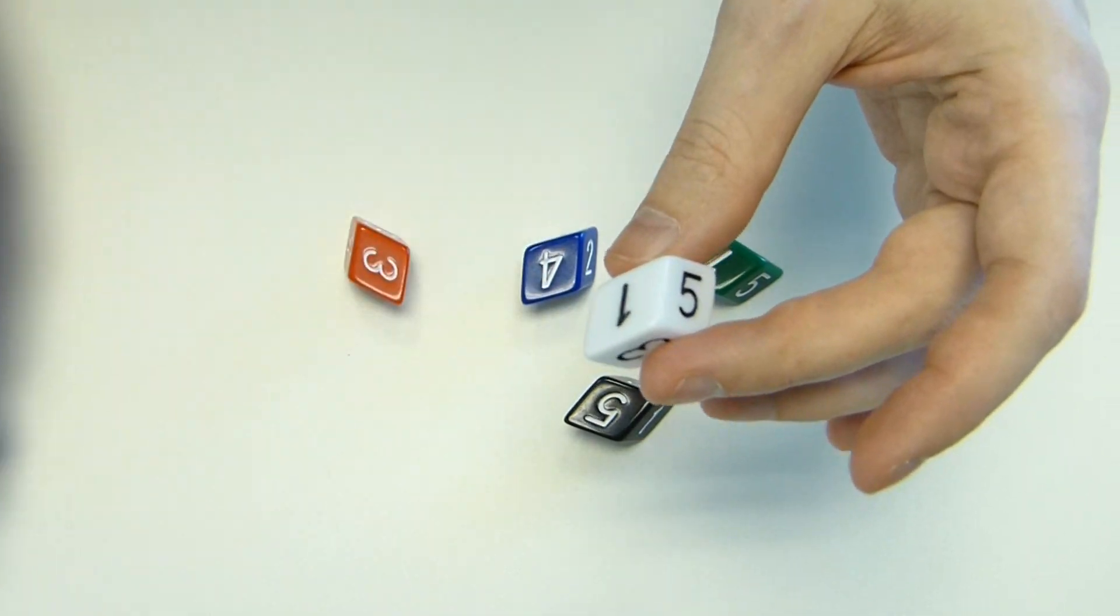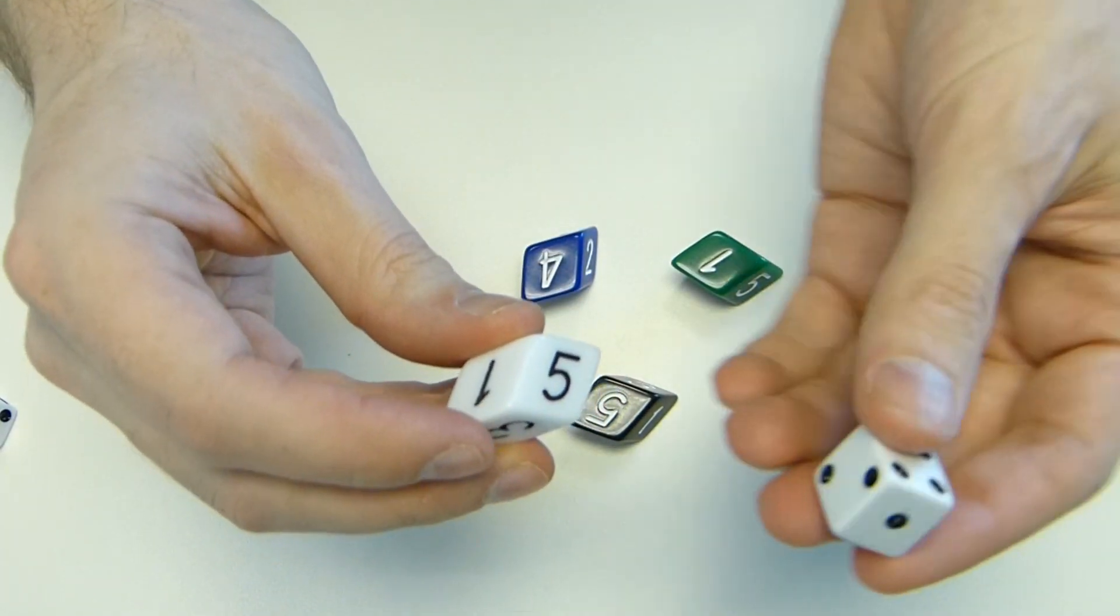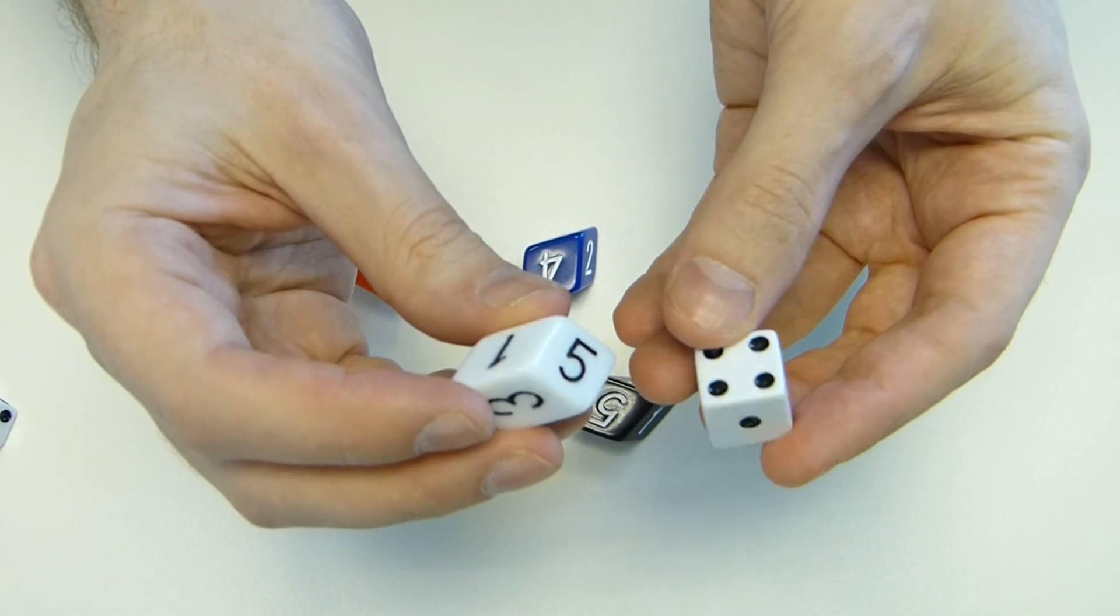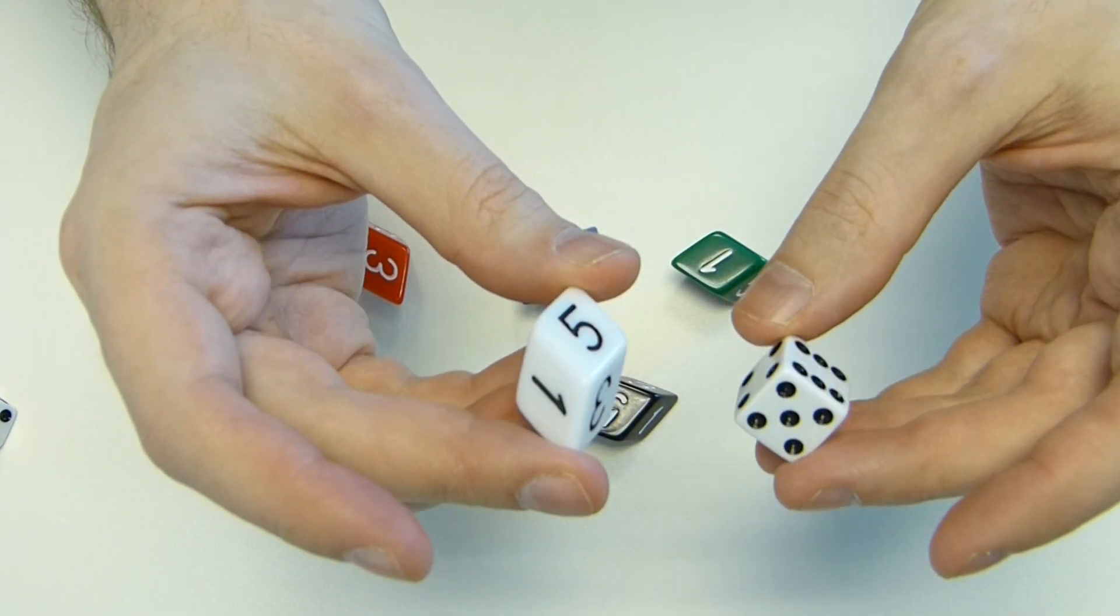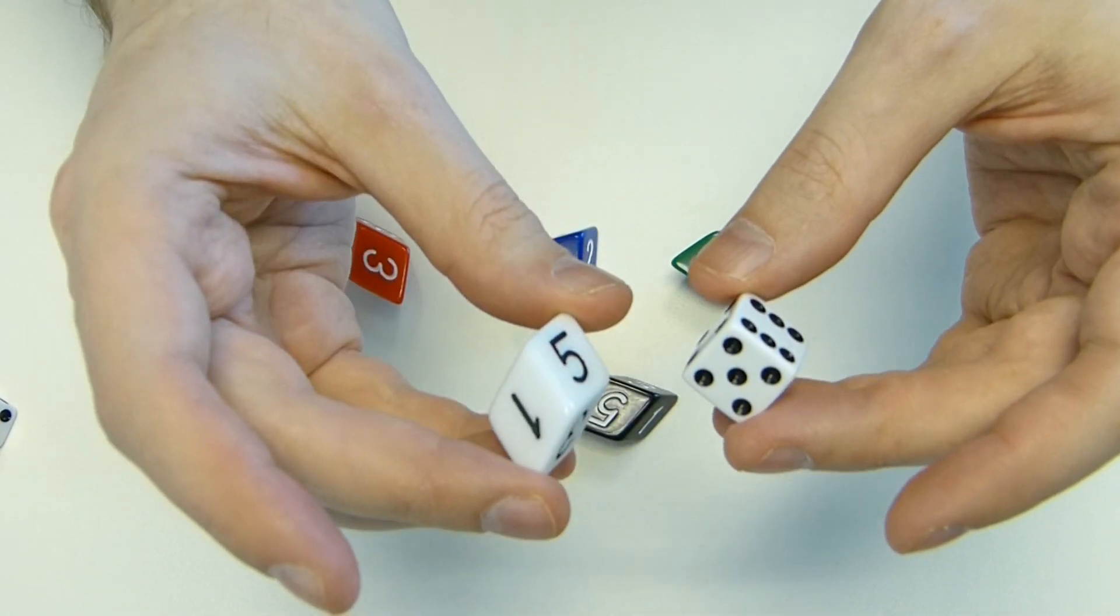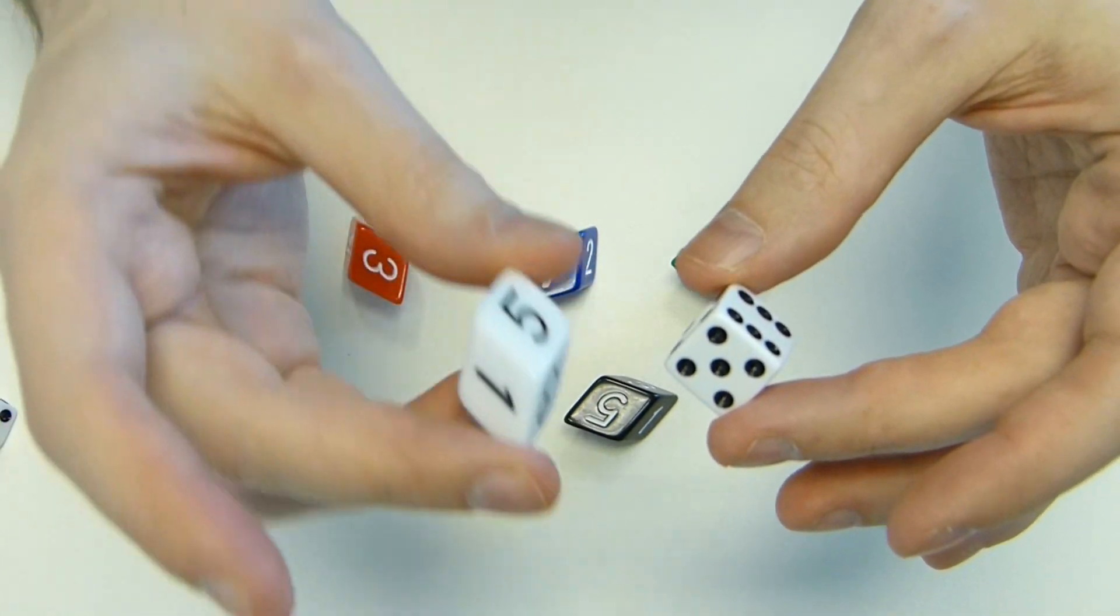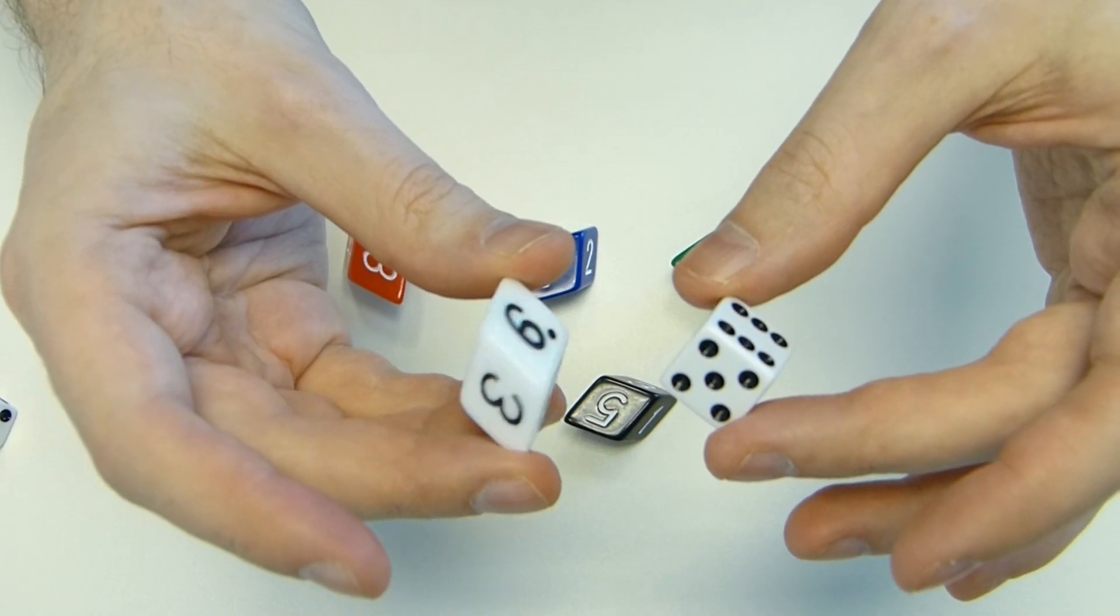It's sort of like you took an ordinary cubical die and you sort of slanted it over to the side. Or actually, another way to think about this, you take an ordinary cubical die and you just stretch it vertically along this axis, then this is the shape that you get.